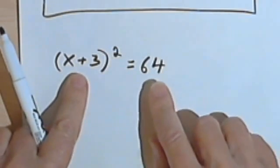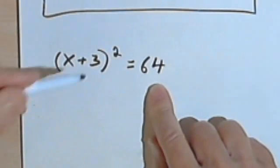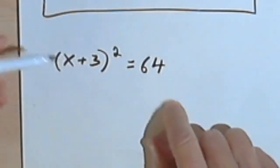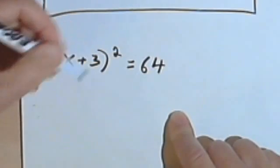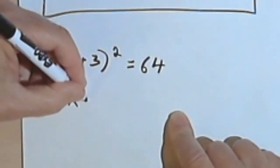So once again I actually have a perfect square on each side of the equation. Now take the square root of each side, so the square root of x plus 3 squared is just going to be x plus 3.